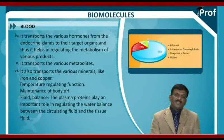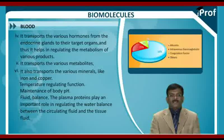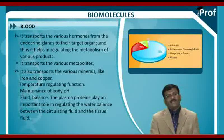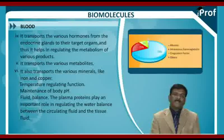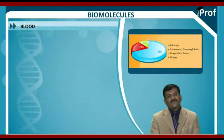Blood also transports various minerals like iron, copper, etc. Next, the temperature-regulating function, the maintenance of body pH, and fluid balance. The plasma proteins play an important role in regulating the water balance between the circulating fluid and the tissue fluids. Protective functions: blood provides different mechanisms to the body against various types of infections.